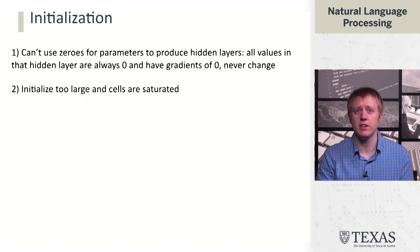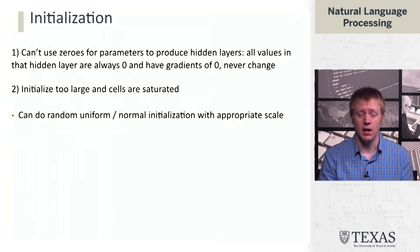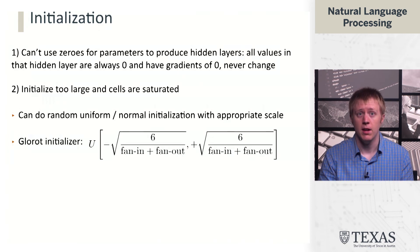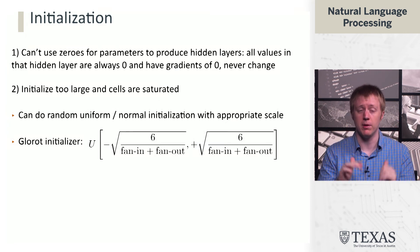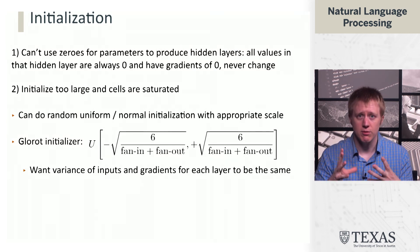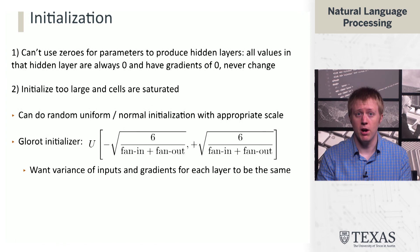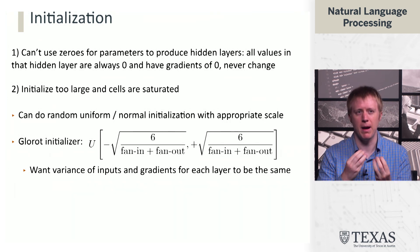We don't want to just initialize to all zeros. We don't want to initialize to large. So there's been a lot of thought put into what the right technique for initializing is, both from a distribution standpoint and also the scale. One initializer is due to Xavier Glorot, and it looks like a uniform distribution between this funky expression here that is based on the so-called fan-in and fan-out of a layer. That's just a fancy term for the number of inputs to that layer and the number of outputs.